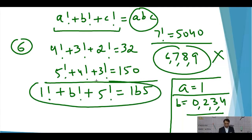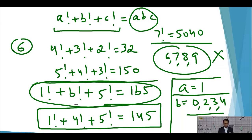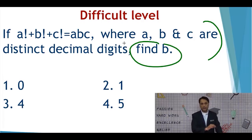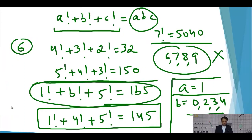All that's required now is to plug in these possible values for B and see which satisfies the equation. Only B = 4 works: 1! + 4! + 5! = 1 + 24 + 120 = 145. So A = 1, B = 4, C = 5, and since the question asks for B, the answer is option 3, which is 4.